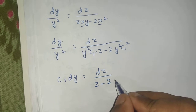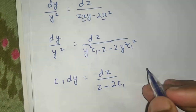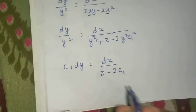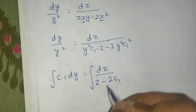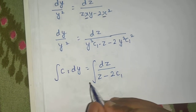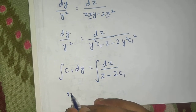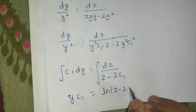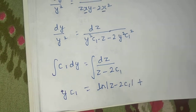Now integrating both sides: the left side gives y times C1. On the right side, since the numerator is a constant and the denominator is linear in z, the integral is ln(z minus 2C1). So we get y·C1 equals ln(z minus 2C1) plus a constant.